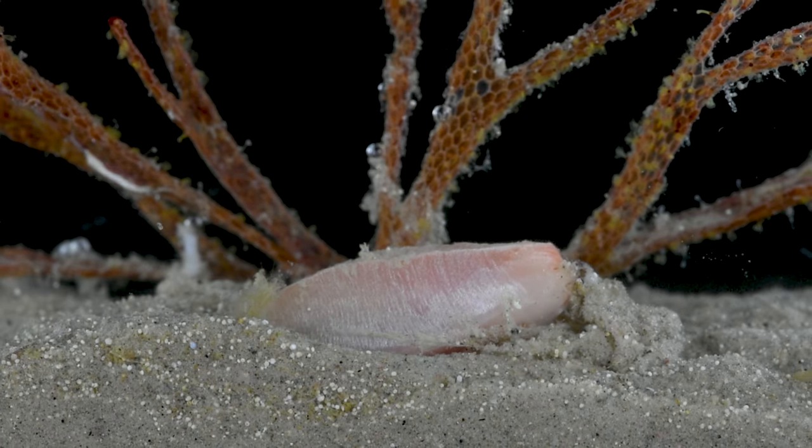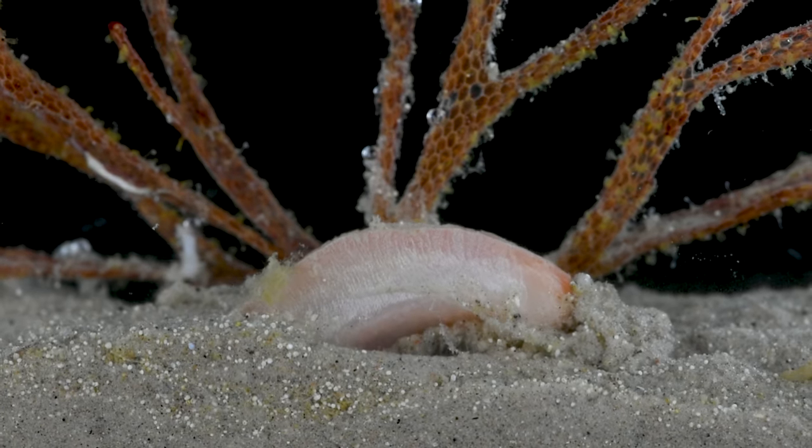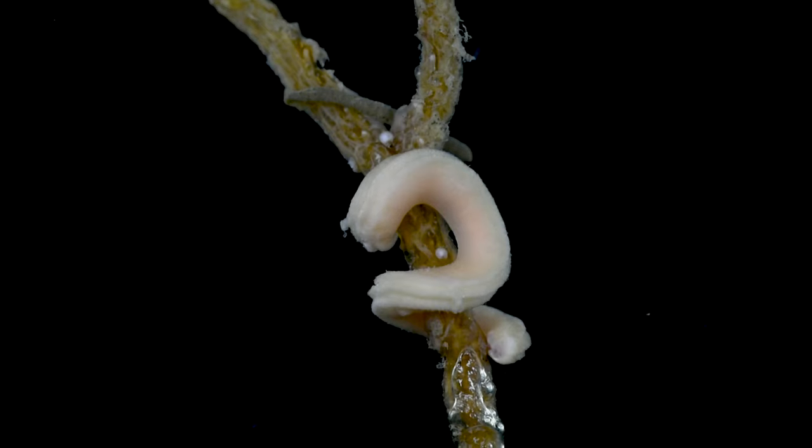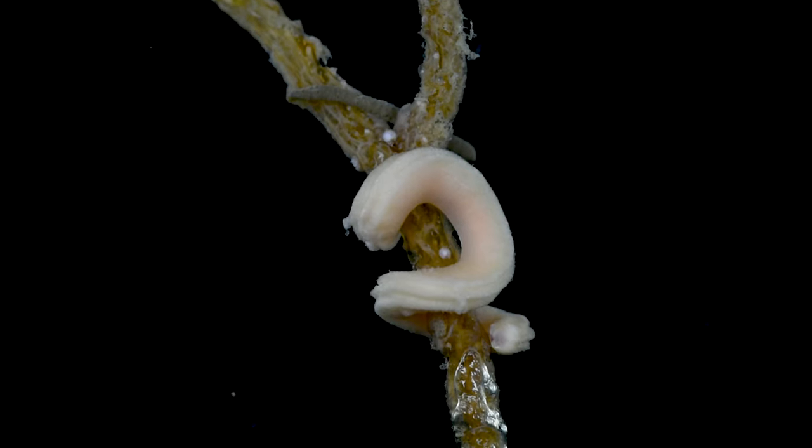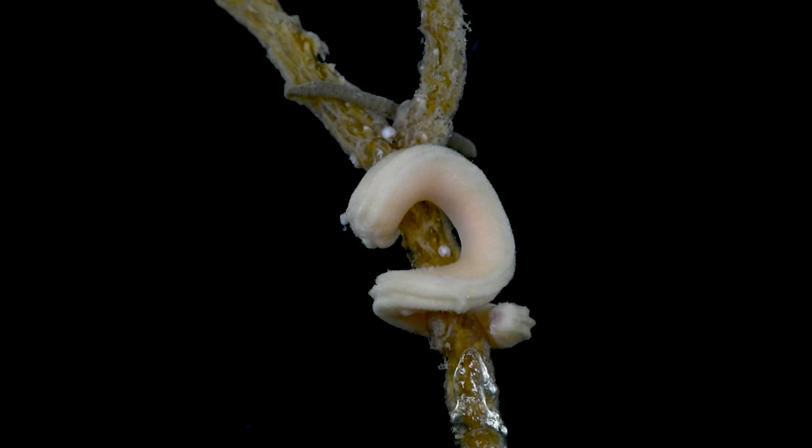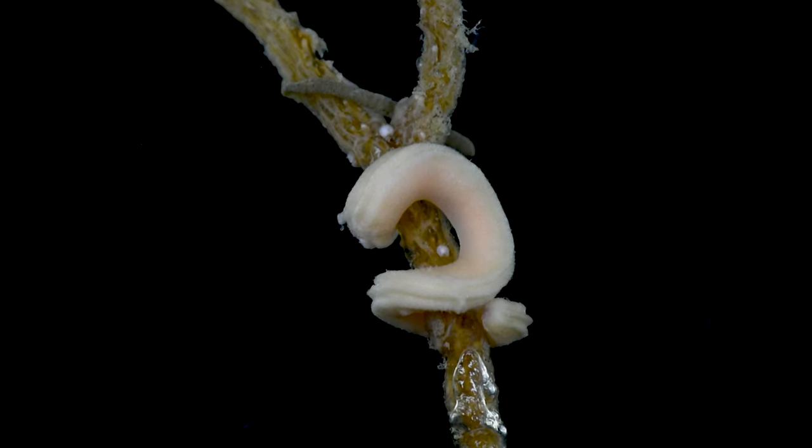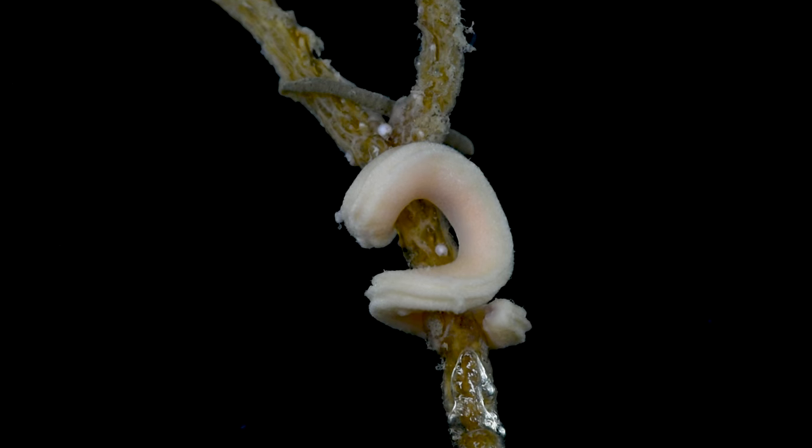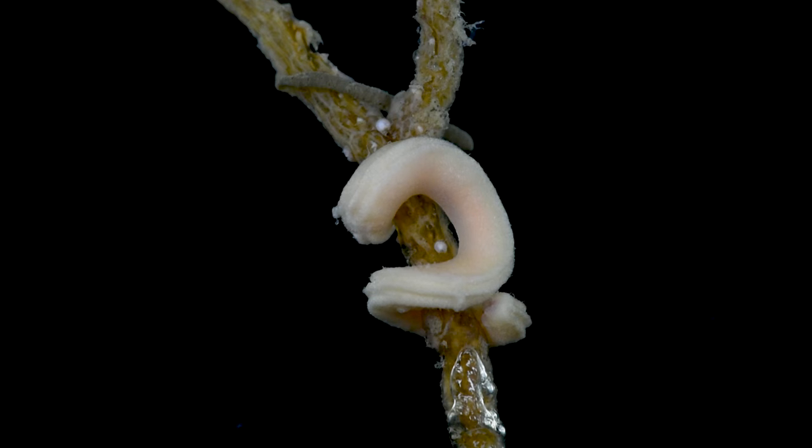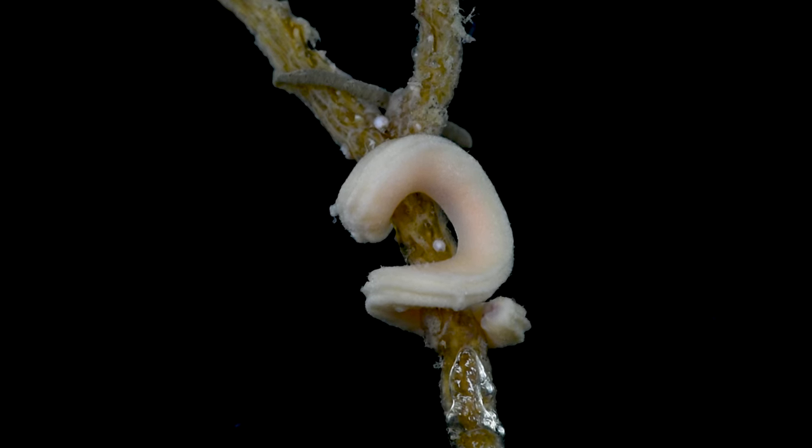While Neomenia live very active, predatory lives, some other solenogasters take a more relaxed approach to carnivory. This is Antonomenia tricarinata. The Antonomenia's long slender body wraps tightly around the trunk of a branching hydrozoan colony. This Antonomenia will move slowly around the colony, leisurely grazing on polyps.